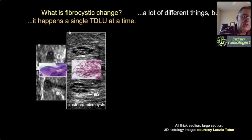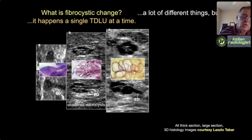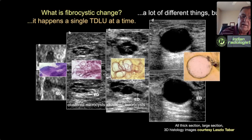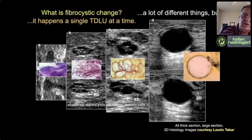As fibrocystic change gets more progressive, the acini enlarge and the walls between some of them rupture or become effaced, so we have fewer larger microcysts. Ultimately, if all the walls rupture or efface, we come up with a simple unilocular cyst. These are beautiful large-section, thick-section slides from Laszlo.